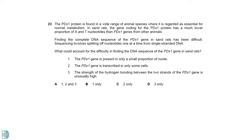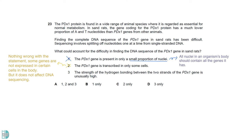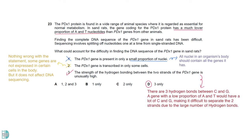Question 23 talks about a gene called PDX1. It is asking the reason why it can be difficult to sequence this gene. One is wrong, as all nuclei in an organism's body would contain all the genes it has. So you won't have only a small number of nuclei in the body cells having a particular gene. While 2 is a correct statement, as some genes are not expressed in certain cells in the body, it does not affect DNA sequencing. 3 is the only correct option. There are three hydrogen bonds between C and G base pairs. So a gene with a low proportion of A and T would have a lot of C and G, making it difficult to separate the two strands due to the large number of hydrogen bonds.